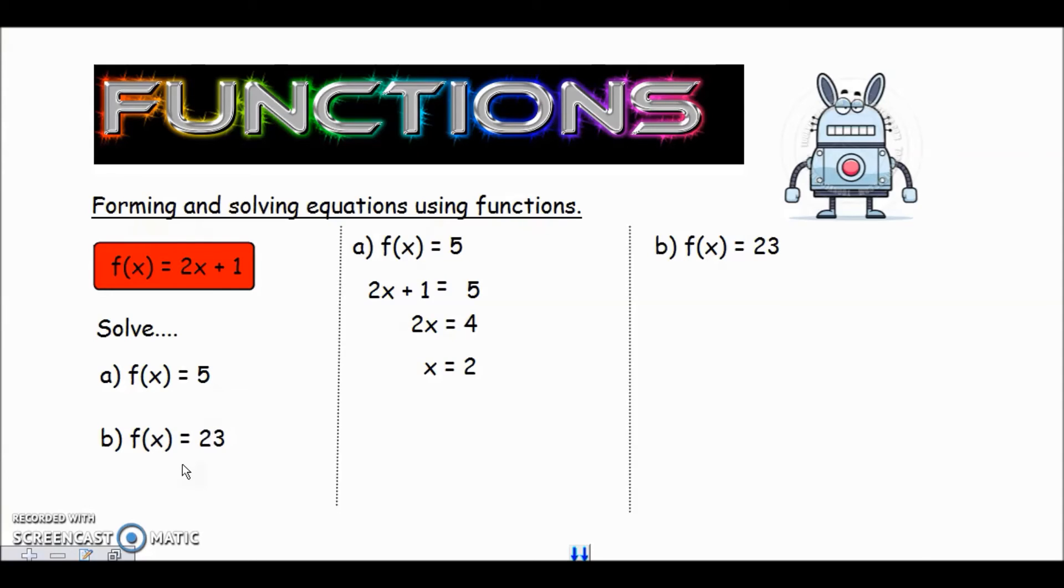Okay, hopefully you've had a go at that. I'm going to go through the solution very quickly. Again, we need our function, 2x + 1, set it equal to whatever it says in the question, which is 23. So the function is now equal to 23. Follow the method for solving the equation: take away 1 from both sides, that leaves me with 2x = 22, and then divide both sides by 2 and you should have got x = 11.